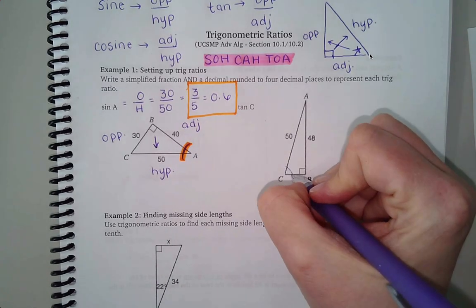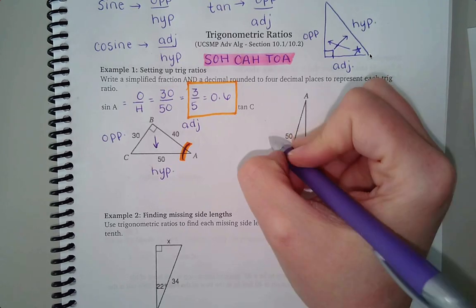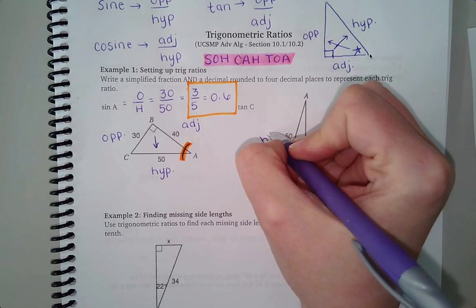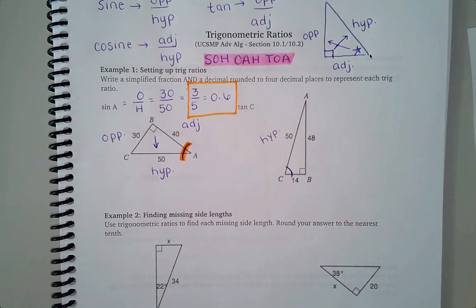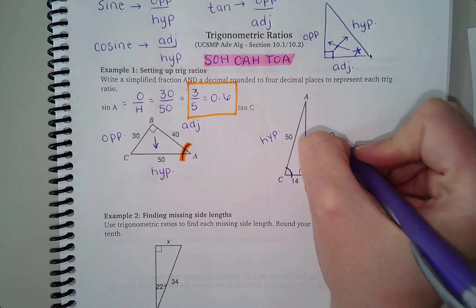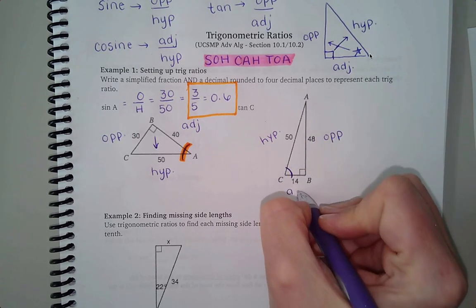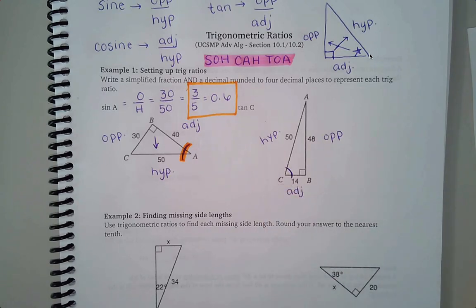If C is my angle, first one I'm going to label is the hypotenuse. That's the 50 because that's across from the 90. The opposite would be across from angle C, so that's opposite over here. And then adjacent is next to C.